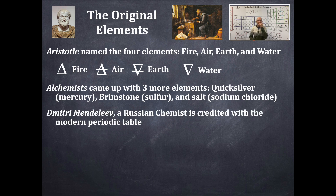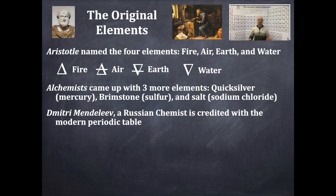Then we come across an actual real scientist who did real chemistry — a Russian scientist credited with our modern-day periodic table. His name is Dmitry Mendeleev. Don't forget that name.